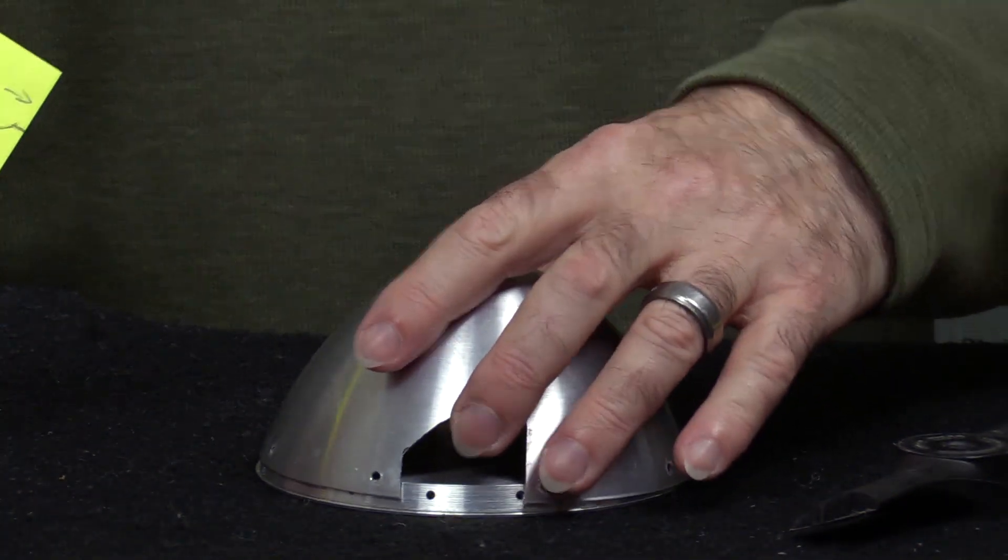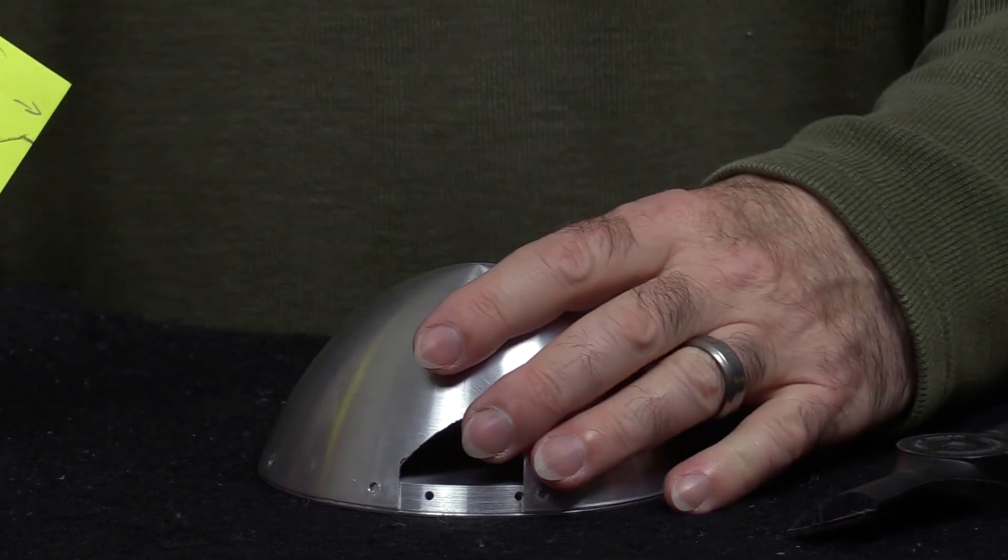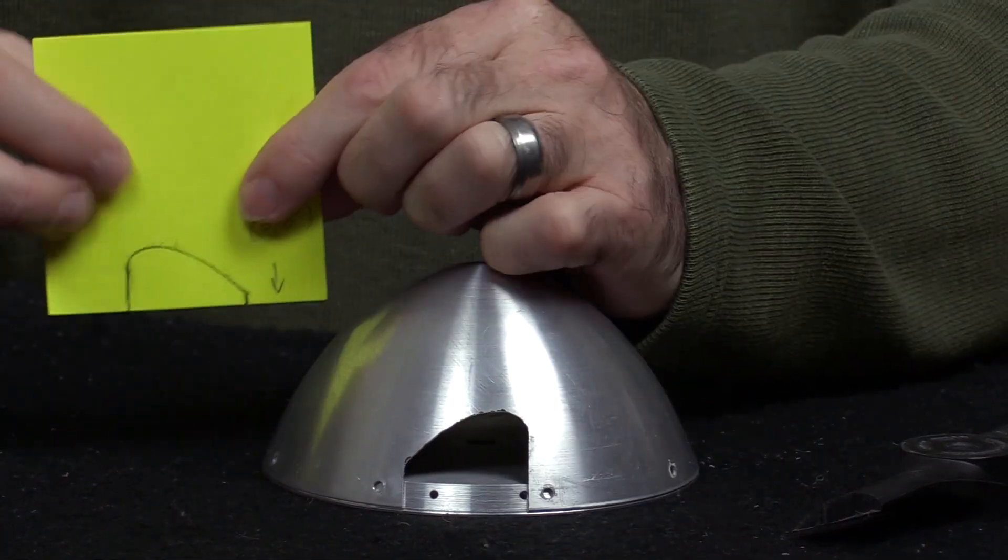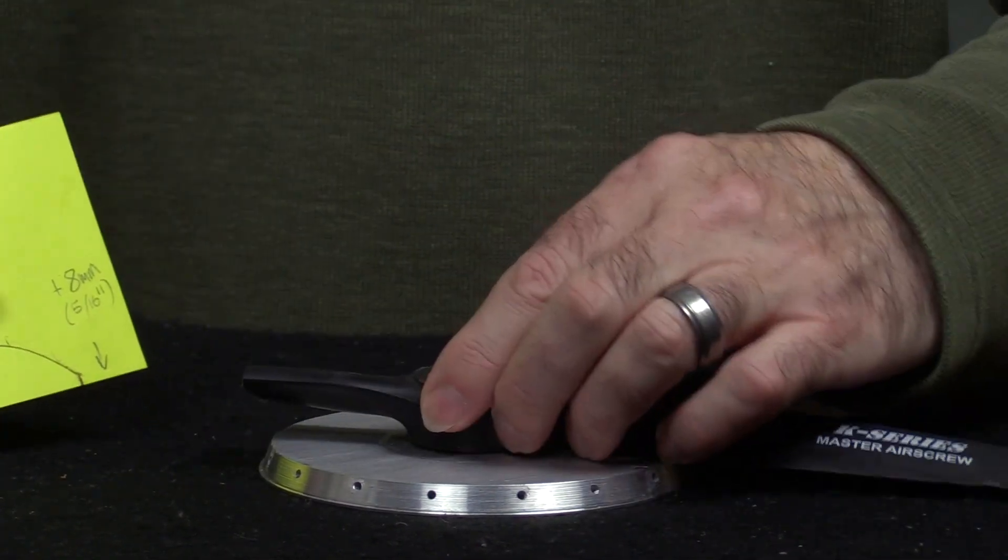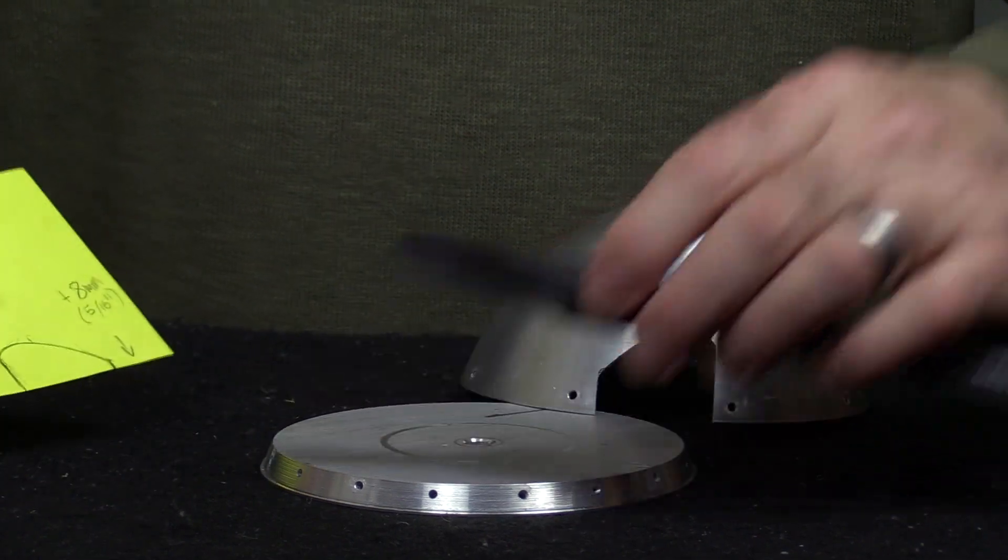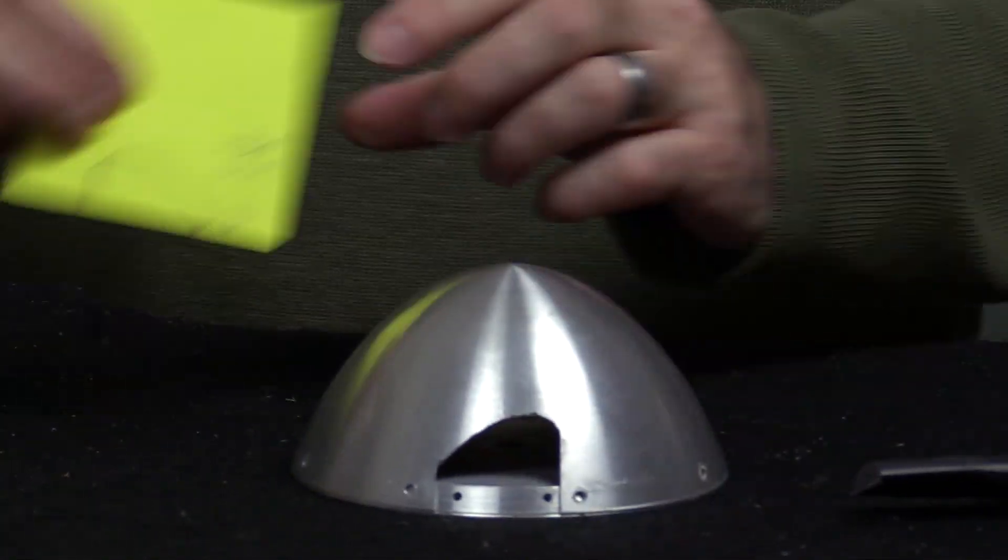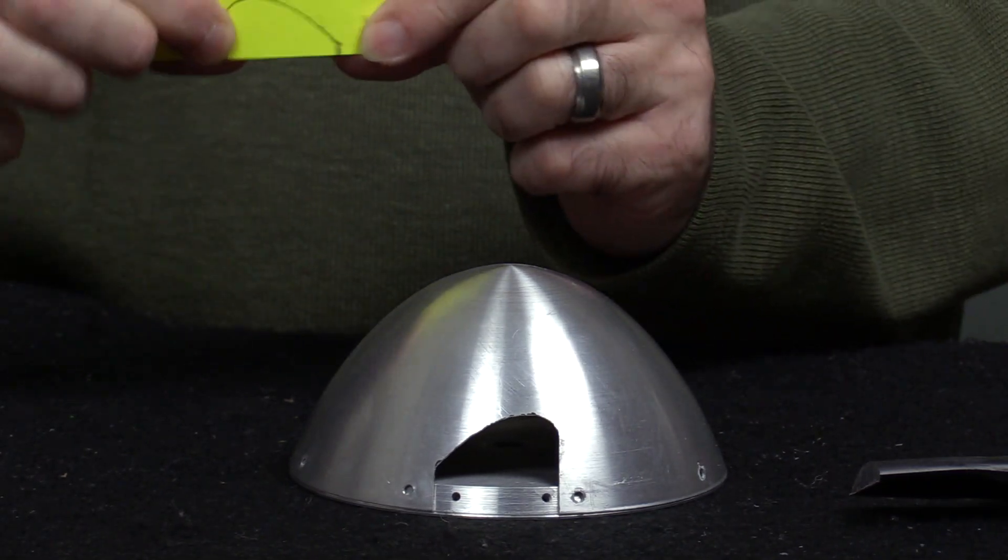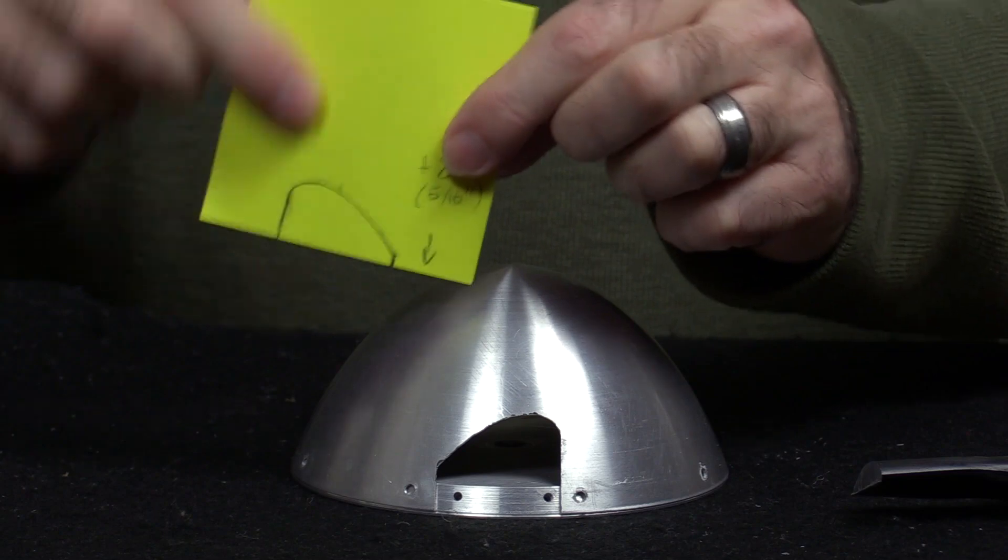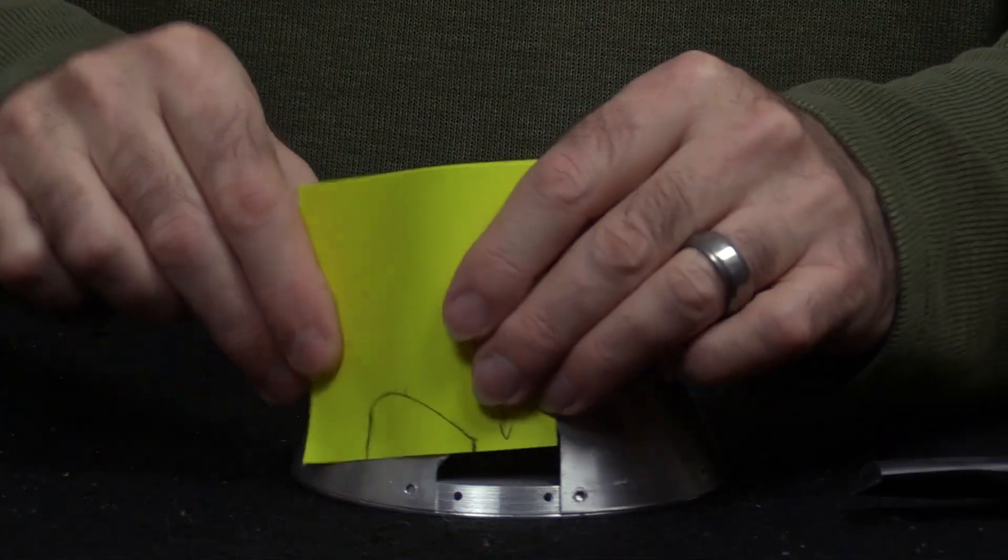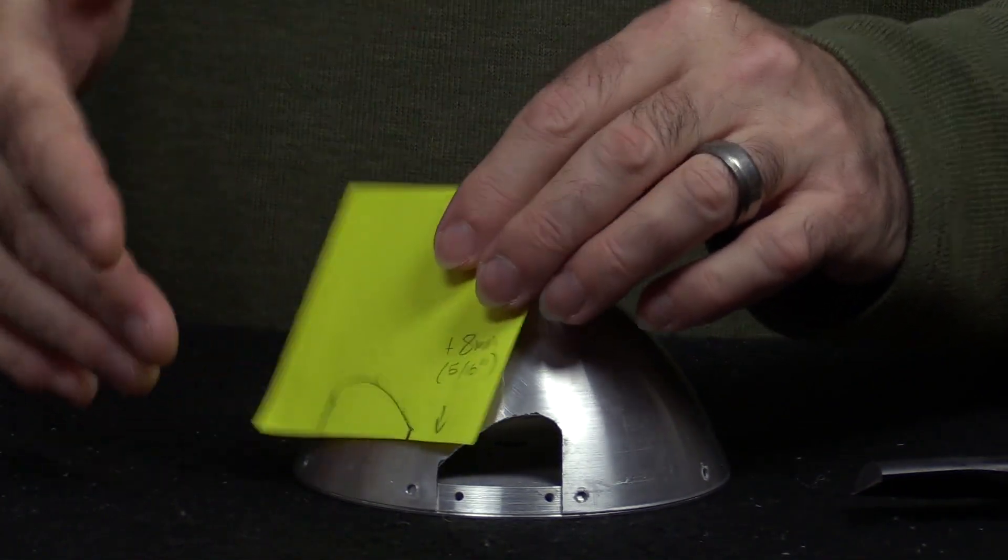I know the prop is going to be sitting on this backplate and the backplate happens to be about eight millimeters thick. This shape needed to be raised up about eight millimeters. Now I pondered this for quite a while. If I make a copy of this and try and tape it down it's going to be curved this way and curving back this way, it's going to be wrinkled and there's no way I could do it accurately.